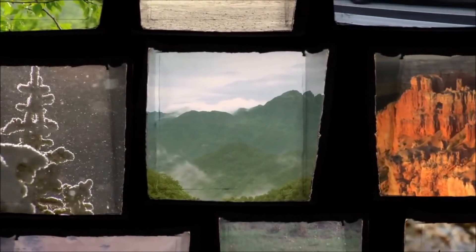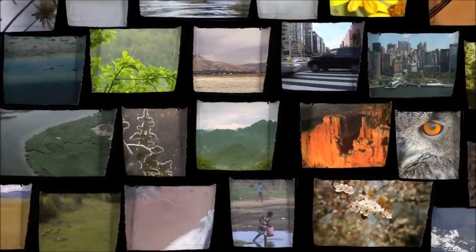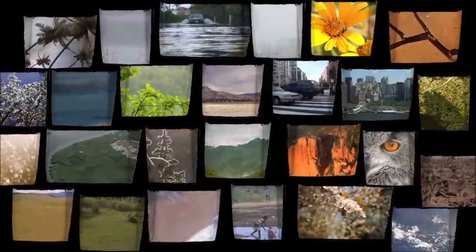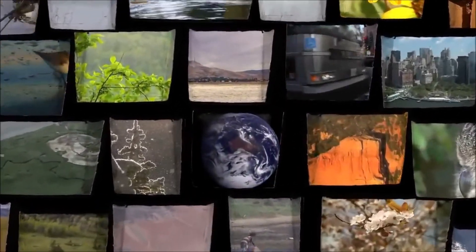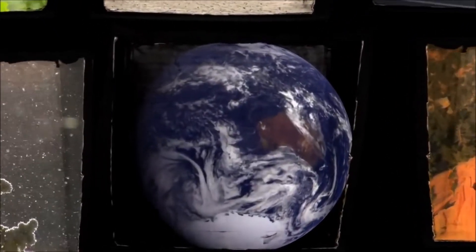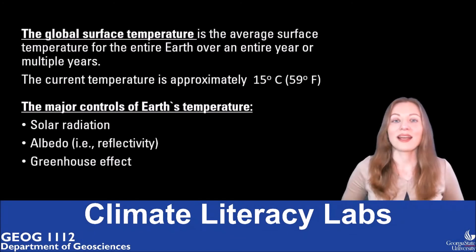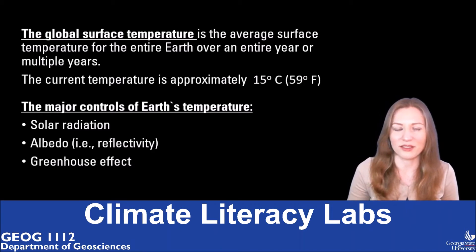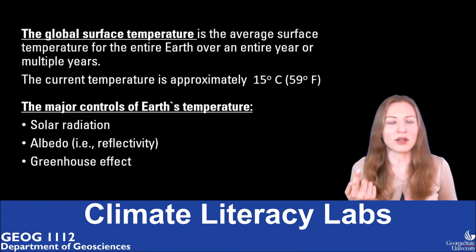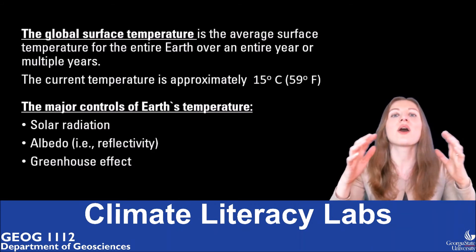Daisy World is a much simpler place than our own planet, but it shows us that maintaining a population on Earth requires a delicate balance with the right organisms and the right range of environmental conditions. I hope this video helped you understand how complex and fragile Earth's climate system is, and how a change in one parameter can lead to an imbalance in the whole system.